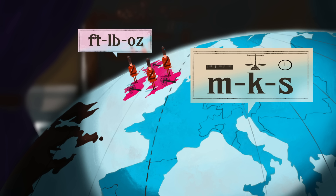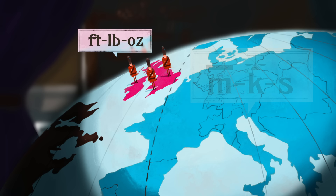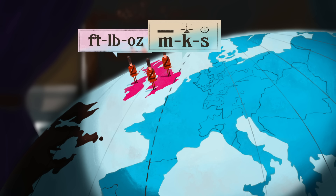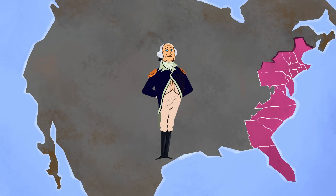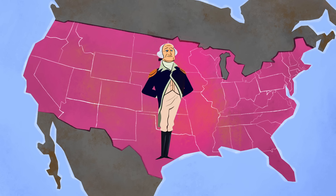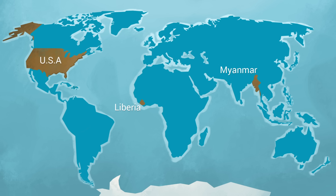As France's main rival, Britain had resisted revolutionary ideas and retained its traditional units. But over the next two centuries, the British Empire slowly transitioned — first approving the metric system as an optional alternative before gradually making it official. However, this switch came too late for thirteen former colonies that had already gained independence. The United States of America stuck with the English units of its colonial past, and today remains one of only three countries which haven't fully embraced the metric system.